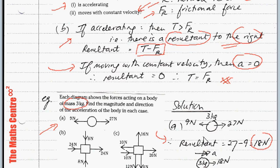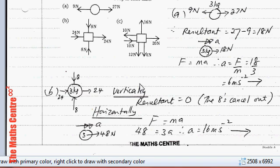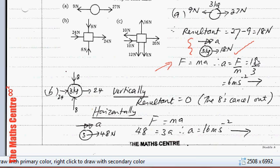Since there is a resultant of 18 N to the right, there will be an acceleration to the right. Using F equals MA, acceleration A equals F over M, so 18 divided by 3 gives 6 meters per second squared acting to the right.